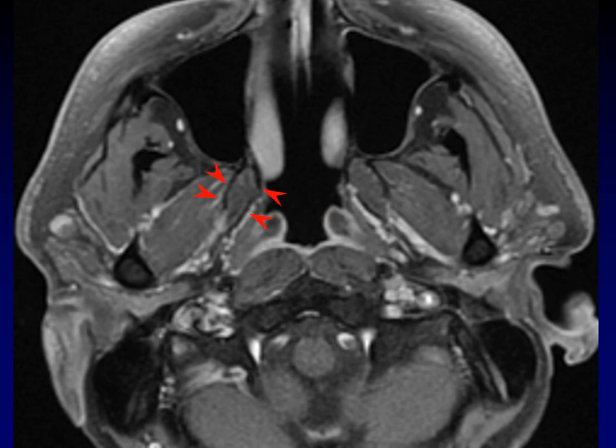Those two black lines are the pterygoid plates. There's a medial and lateral pterygoid plate to which the pterygoid muscles attach, and the pterygoid plates extend up and connect to the skull base. The circled muscle here is the prevertebral muscles. Depending on how close you get to the skull base, these may be longus colli or longus capitis muscles, but we'll lump them together and call them the prevertebral muscles for this discussion of the nasopharynx.